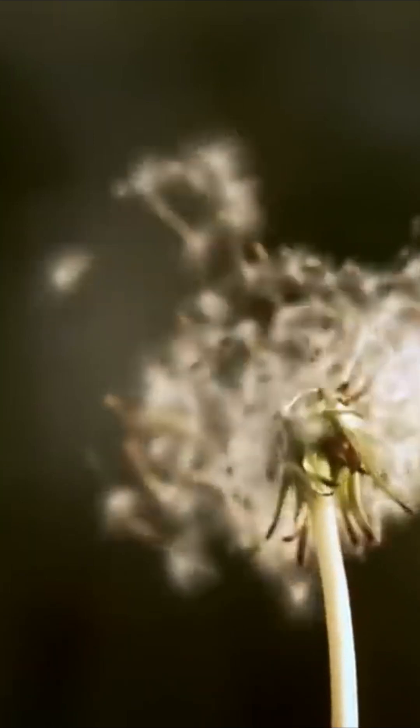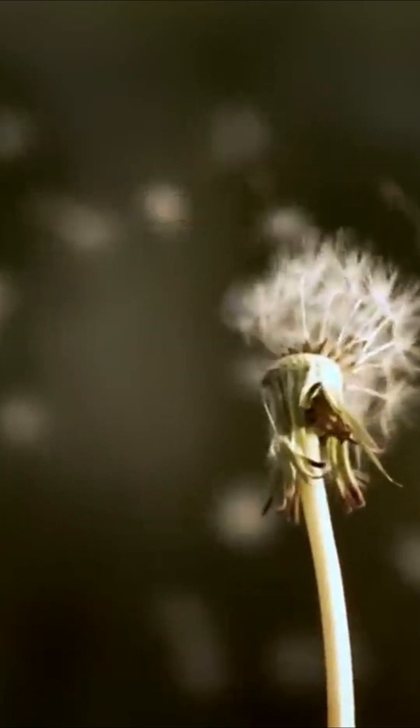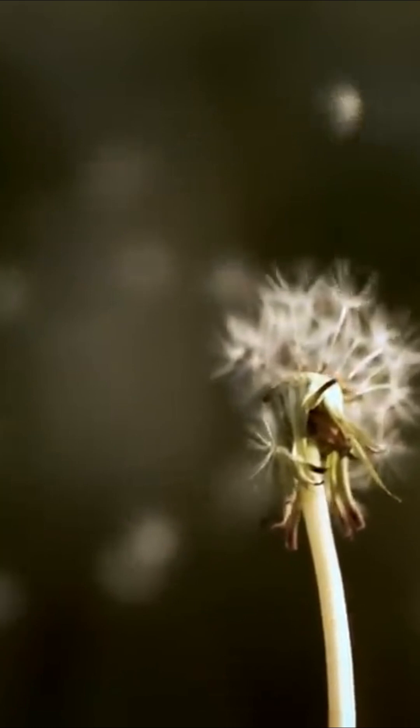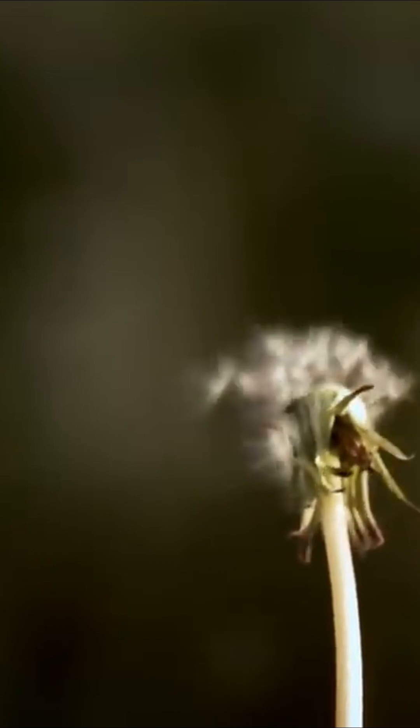The seed detaches itself from the plant and ensures the dissemination of the species. To do this, it possesses a number of assets, such as its tiny size, hooks enabling it to attach itself to animals, and appendages providing a grip on the wind.